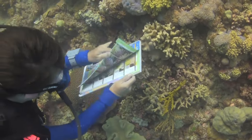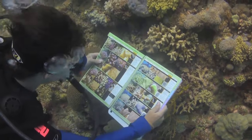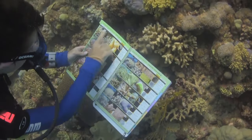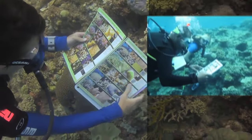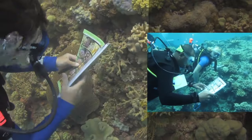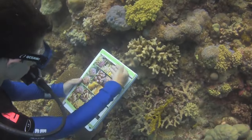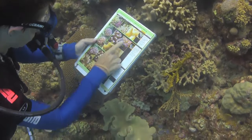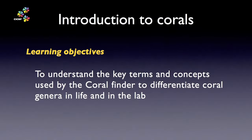The Coral Finder lets you learn how to identify coral genera. With field experience and some mentorship, your confidence will grow and you will be able to teach others. Eventually, you will begin to see the species and their differences among the genus-level similarities. Now that we have some context for our learning process, let's meet the key terms and concepts used by the Coral Finder to separate common coral genera.